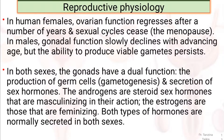In human females, ovarian function regresses after a number of years and the sexual cycle ceases — this is called menopause. In the case of male, gonadal function slowly declines with advancing age, but the ability to produce viable gametes persists. In both sexes, the gonads have a dual function: the production of germ cells, which is called gametogenesis, and the secretion of sex hormones.